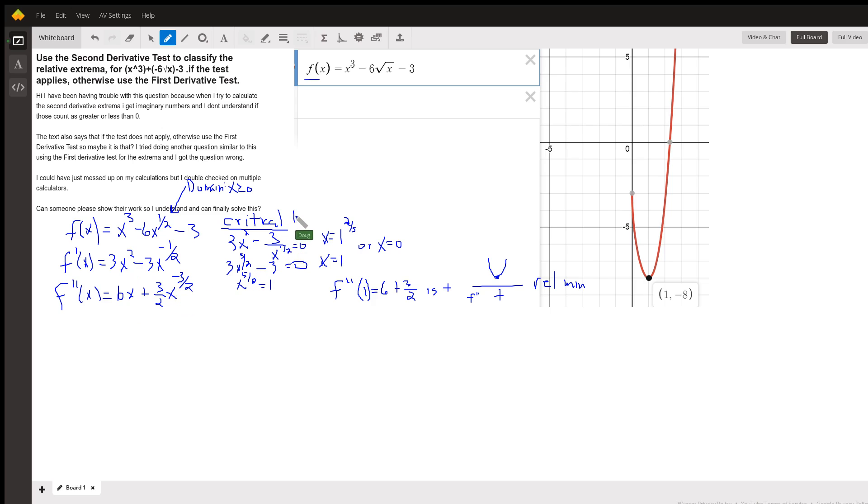To find the critical numbers, we want to know when does the first derivative equal 0, or when is the first derivative undefined. So here we are setting the first derivative equal to 0. We know that x cannot be 0.